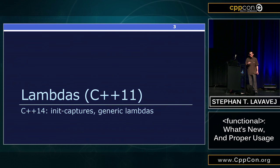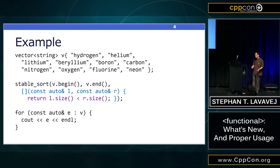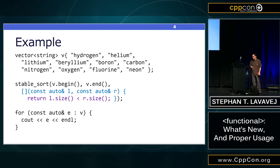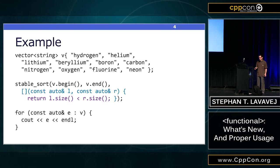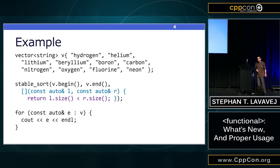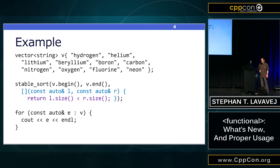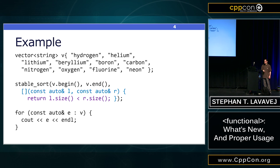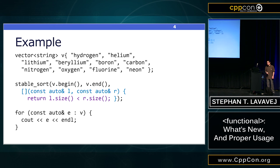Lambdas were added in C++11, and in C++14 they became more powerful with init-captures and generic lambdas. Here I've got a vector of strings, and I want to sort them not lexicographically but by their lengths, stably preserving original order when lengths are the same. With a lambda I can do it all in a single line: I take L and R and return whether L.size() is less than R.size(). The generic part is using const auto& — there's no reason to repeat 'string', and the lambda would keep working if the type changed to u16string, u32string, or wstring.